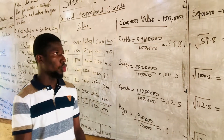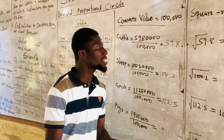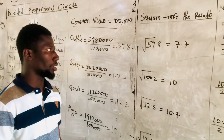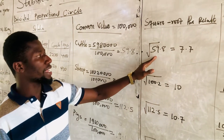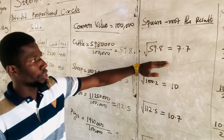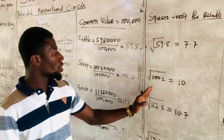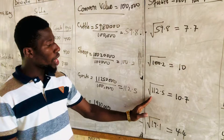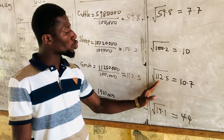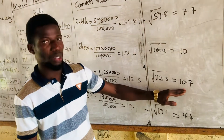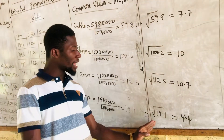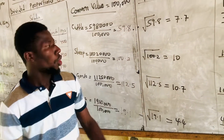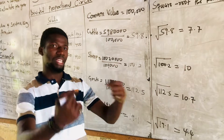The next step is to square root all the results. We square root 59.8 and get 7.7. We square root 100.2 and get 10.0. We square root 112.5 and get 10.7. We square root 19.1 and get 4.4. When we obtain these numbers, we are not done — we proceed to the next step.